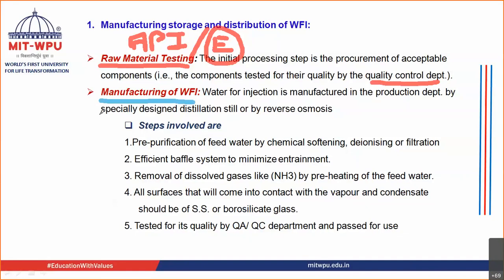This is not true only for parenteral preparation — the step of raw material testing should be carried out as a first step for each and every formulation. Once the raw material has been passed, you start with the first step: manufacturing of your water for injection. Water for injection is manufactured either by distillation or by reverse osmosis process.